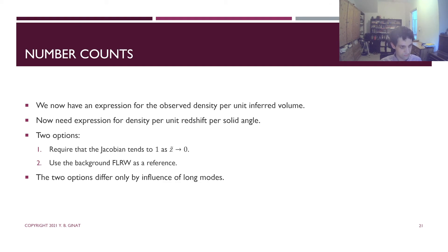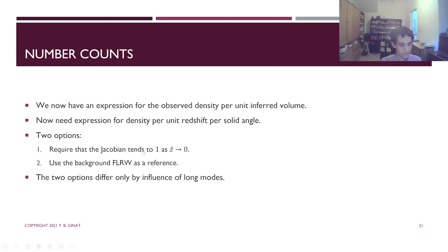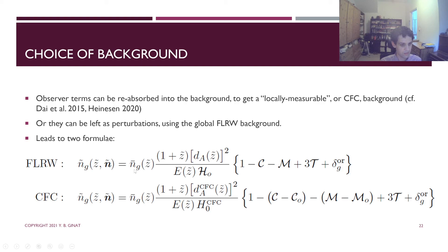Very briefly, this delta is related to number density per unit volume, and we need to convert it to number density per unit observer redshift per solid angle. There are two choices depending on how the background is defined. One can use the global FLRW background — involving angular diameter distance, the Friedmann equation coefficient, and the global Hubble constant of the observer — or the observer can measure the Hubble constant locally, with the difference appearing in observer terms.